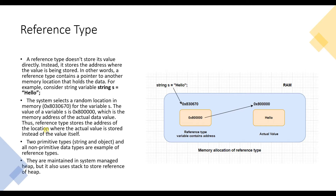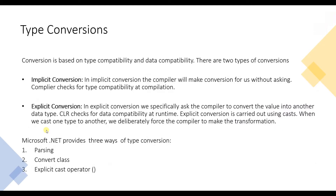Now we have type conversion. Type conversion is a process to convert one type to another type. Conversion is based on type compatibility and data compatibility. There are two types of conversion in C#: implicit conversion and explicit conversion.